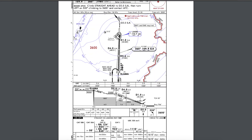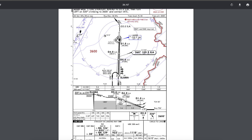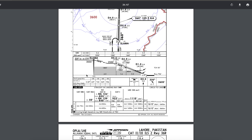Here we are on the ILS. There is a waypoint at 5.6 DME. If we are going to the FMC computer, it will show 4 DME, then 1 DME, then we will land. The main things highlighted in the chart are heading 360 and ILS frequency 109.9.